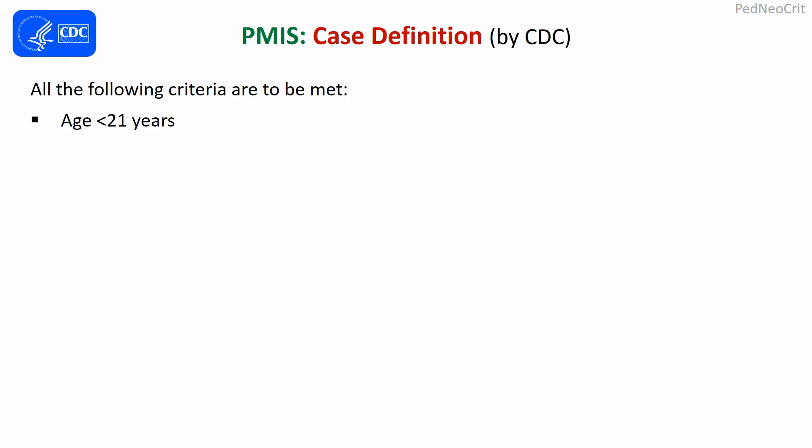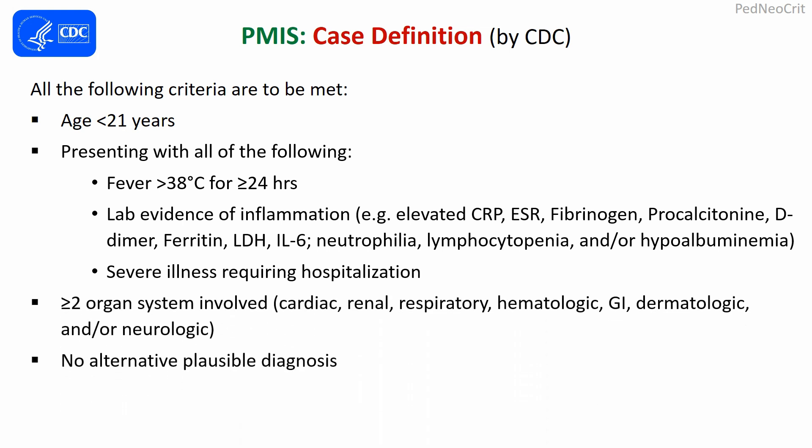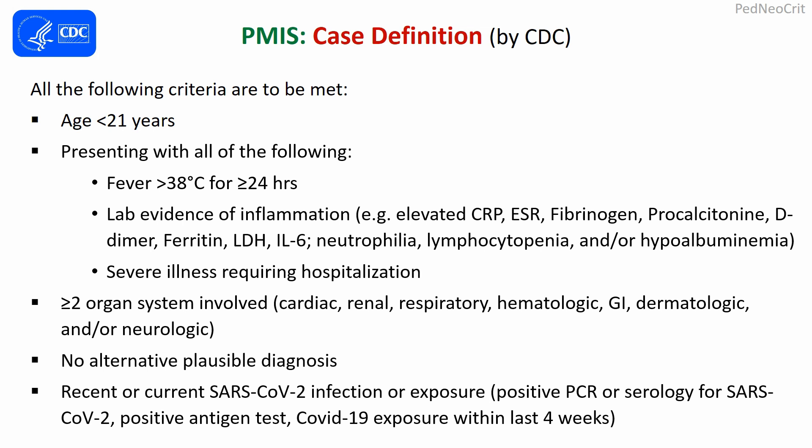The CDC case definition is more elaborate. It includes age less than 21 years, presenting with all of the following: fever more than 38 degrees Celsius for more than 24 hours; lab evidence of inflammation including elevated CRP, ESR, fibrinogen, procalcitonin, D-dimer, ferritin, LDH, neutrophilia, lymphopenia, and/or hypoalbuminemia; severe illness requiring hospitalization; more than two organ involvement including cardiac, renal, respiratory, hematologic, gastrointestinal, dermatologic, and/or neurologic; no alternative possible diagnosis; and recent or current SARS-CoV-2 infection or exposure evidenced by positive PCR, serology, positive antibody test, or COVID-19 exposure within the last four weeks.